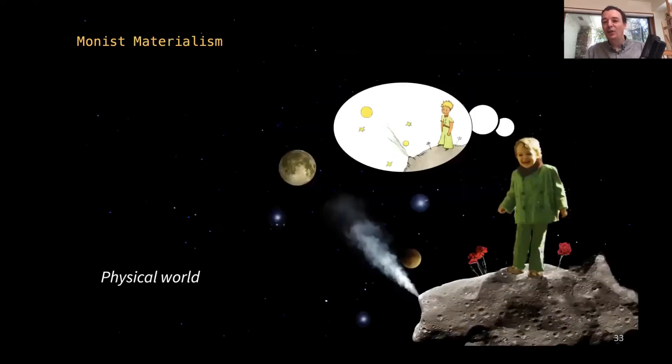Then there is the idea of monist materialism. There's also only one thing, and the physical world is primary. I'm standing in this physical world on a physical piece of rock that is traveling through space, looking at the moon, the sun, and the stars. I'm having ideas that are realized physically in my brain as physical machinery. Most people in our civilization believe in this monist materialism.